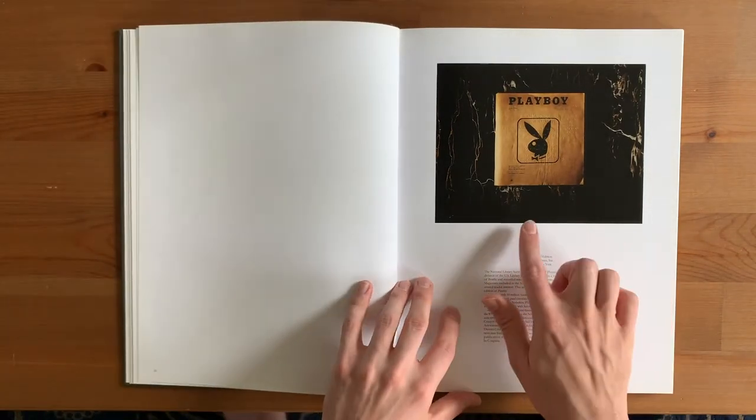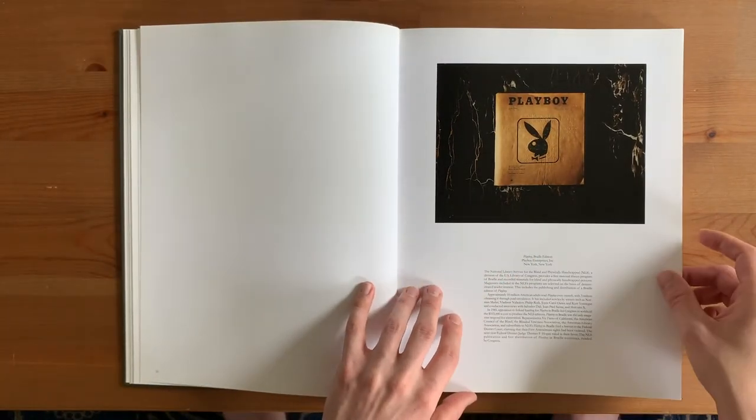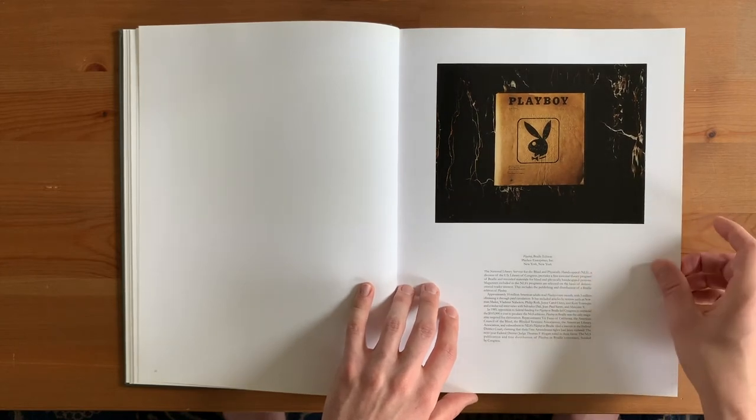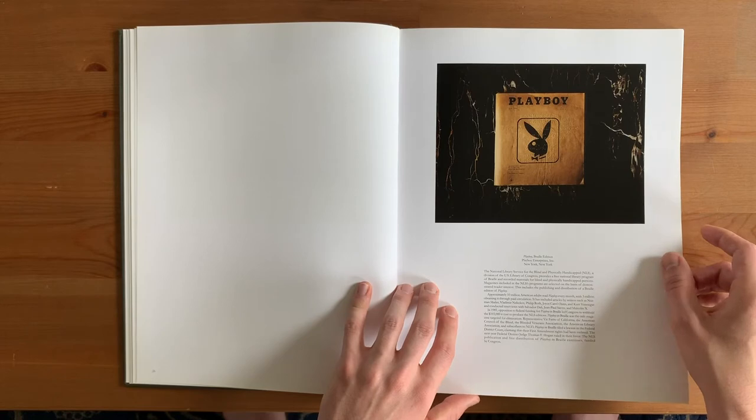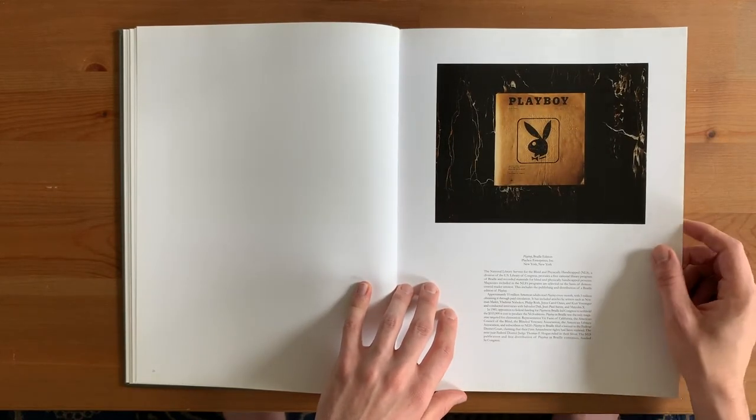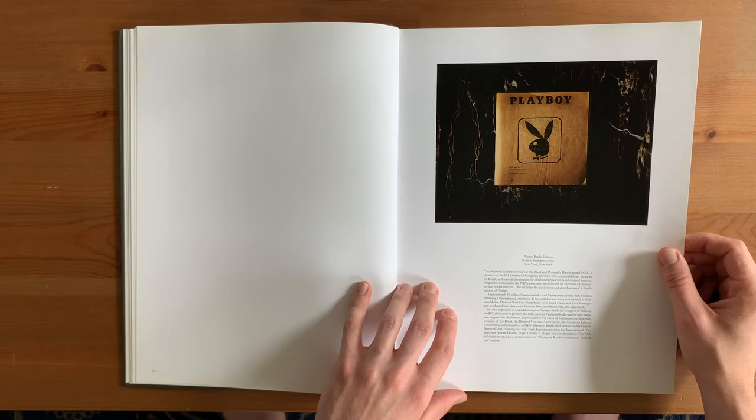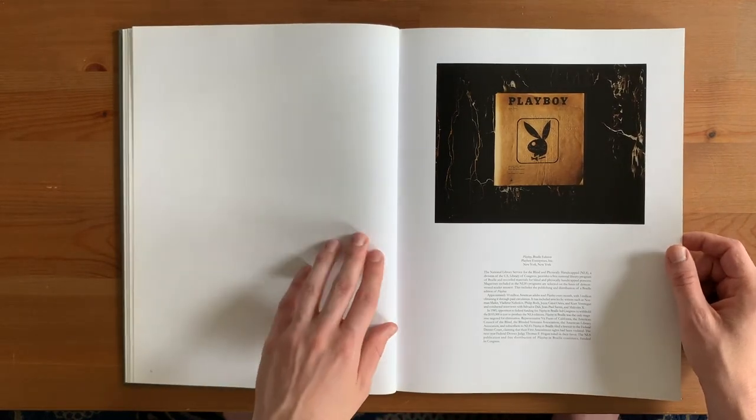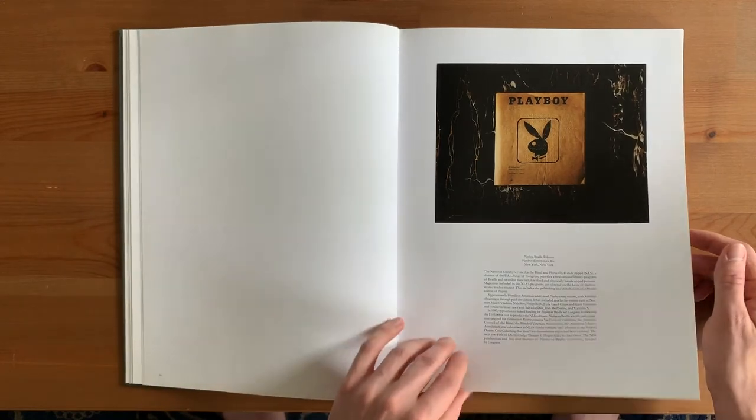This is a Braille Playboy magazine. And so the Library of Congress has a service for blind and physically handicapped. And they translate periodicals into Braille. And so what you see here is a distillation of a Playboy magazine. There's no photographs to look at. All you have is text and it's translated to Braille. Kind of a really great irony here.